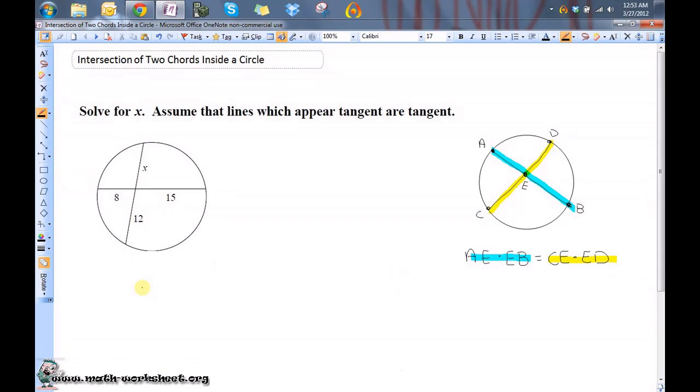To be able to solve this problem, we need to use the following property. If you have a circle with two chords that intersect inside the circle, then the following relationship will hold.